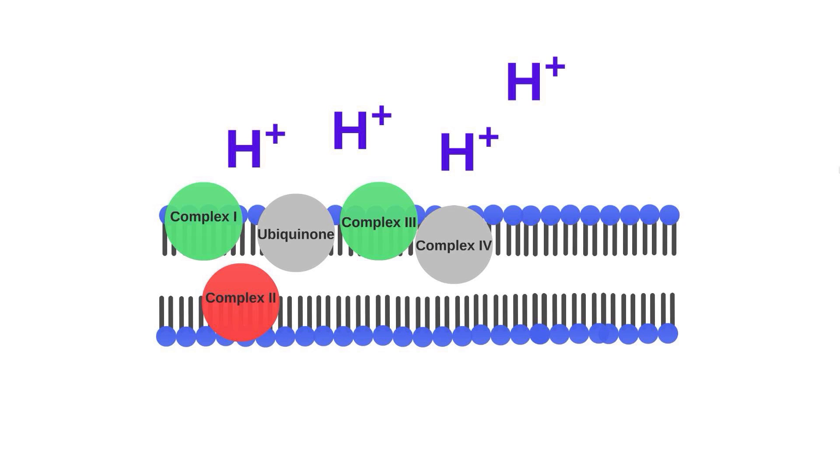ATP synthase is a channel that allows protons to flow from one side of the membrane to the other. As these protons flow, the energy they create as they pass fuels the phosphorylation of ADP to ATP. For each proton that flows through ATP synthase, one ATP molecule is produced.